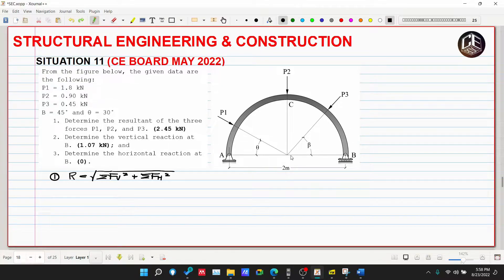I-extend natin yung line of action nila, so kapag in-extend natin ibig sabihin yung effect ng P1, P2, and P3 is sa kahit saang point na yun. We can locate P1 here, P2 here, and P3 here. So P3 natin 0.45 kilonewton, ang ating P2 is 0.90 kilonewton, and P1 is equivalent to 1.80 kilonewton.